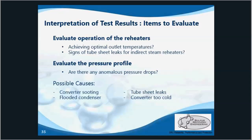A couple more things: we evaluate the reheater performance, ensuring the right outlet temperatures are being achieved. We'll verify the BMS — burner management systems — for direct-fired reheaters if they're in place. Then we'll check if there are any anomalous pressure drops across any of the units. If so, is it from a plugged converter, a tube or tube sheet leak, a flooded condenser, or could it be from a converter operating below the dew point temperature and causing sulfur buildup on the catalyst?